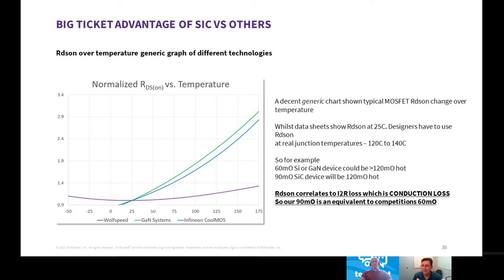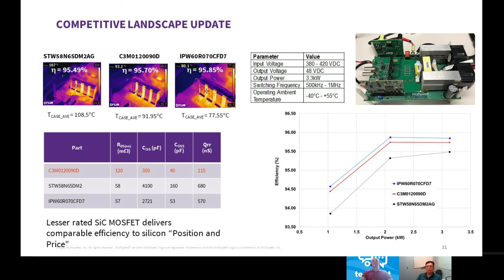That's great information, Guy. Thank you very much. I know you've got some additional information on why this is important — could you walk us through that? I've got a couple of slides. The first is a direct comparison of what we've just been talking about. This was a 3.3 kilowatt DC-to-DC — a typical secondary-side DC-to-DC found in data centers, telecom, that type of application. So 400 volts in, coming from the PFC to 48 volts out — something quite familiar to a lot of people.